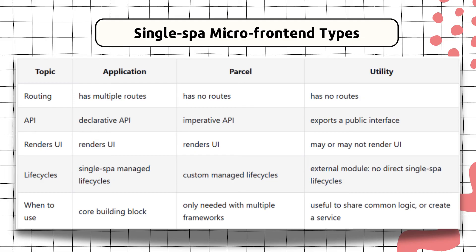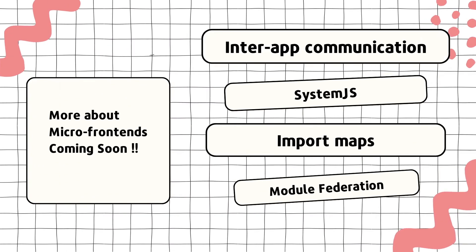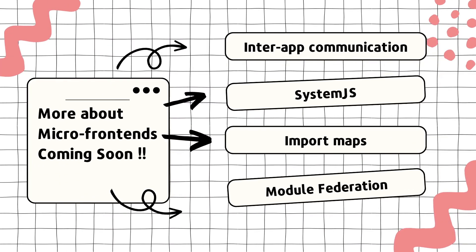Regarding lifecycle management: for Application and Parcel, lifecycles are managed by Single SPA; for Parcel we can also manage it in a custom way; and for Utility there are no direct lifecycles. Those are the main features of the three types of micro frontends.